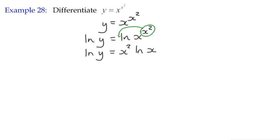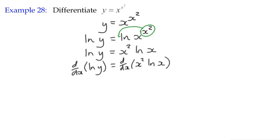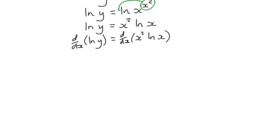Once we've got it in that form, we can differentiate it using implicit differentiation. We do that by stating our desire to differentiate both sides with respect to x. We've got a mixture of x terms and y terms here. On the left-hand side, the log of y becomes 1 over y, which is differentiating in terms of y, so we need to multiply by dy/dx.